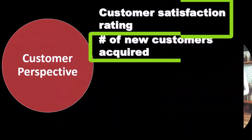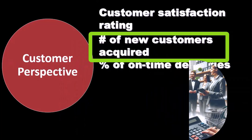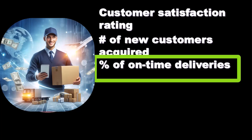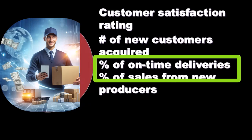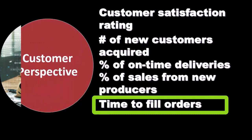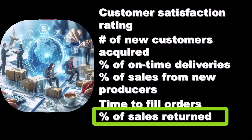Number of new customers acquired — we're trying to quantify it, so how many new customers do we have in this department compared to another? Percent of on-time deliveries — notice we use a percent here because some departments might be bigger or smaller than another, so we can't just use total on-time deliveries. We have to use a percentage in case departments aren't equal in size. Percent of sales from new producers — same concept. Time to fill orders — we can track how long it takes to fill an order. Percent of sales returned — how many sales are returned is an indication from the customer of how satisfied they are.